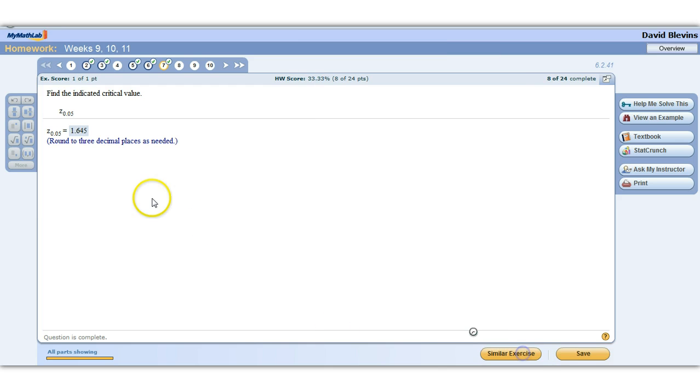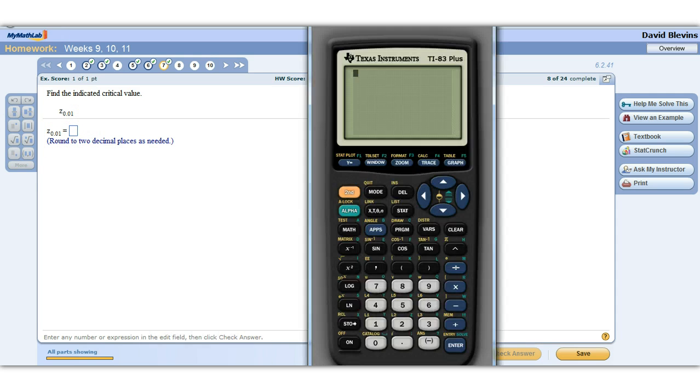All right. So let's do a similar problem just to make sure that we have it down. This one's z.01, another one that we see. Not as often as the 0.05, but we do see it from time to time.